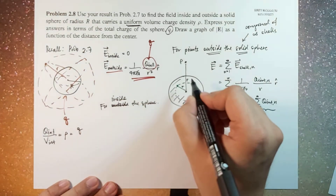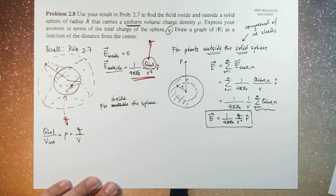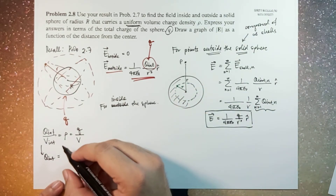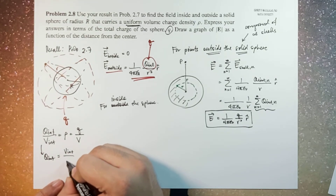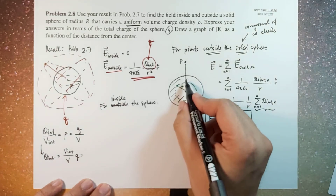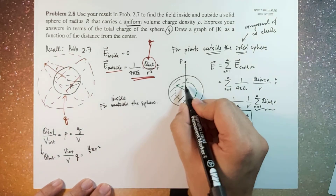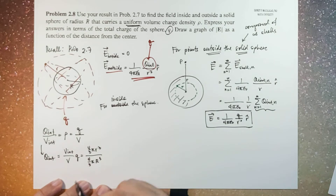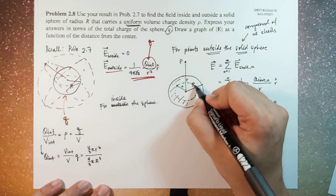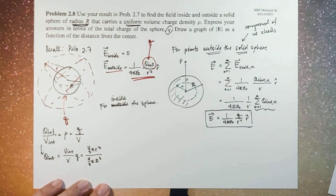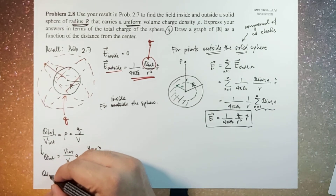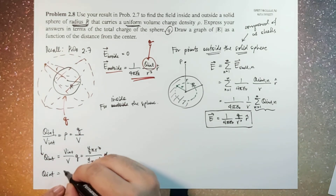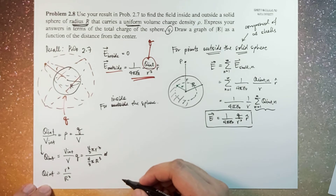The ratio between the charge interior to this sphere and the volume interior to the sphere equals the density, because the density is uniform. This is also equal to the total charge of the sphere divided by the total volume. So Q internal to the smaller sphere will just be equal to the volume interior divided by the total volume times Q. Volume interior is 4/3 pi r cubed, divided by 4/3 pi R cubed, where capital R is the radius of your sphere. Therefore, Q interior equals small r cubed divided by big R cubed times Q.